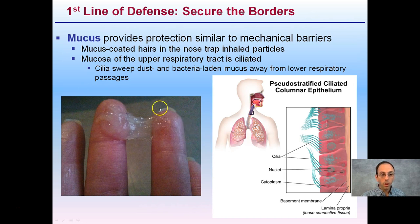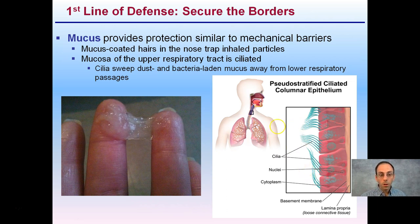In addition, we have our mucus — if you've ever been a little sick and sneezed, you may notice this kind of sticky, gelatinous material called mucus. It provides similar protection to mechanical barriers: it coats the hairs, traps inhaled particles, and is also part of the upper respiratory tract that's ciliated, so it sweeps dust particles from the lower respiratory passages.